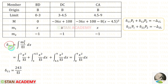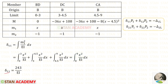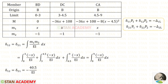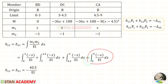Now let us find delta 11. The formula is the integration of M1 squared upon EI dx. Since EI is constant and M1 has the same values across all members, we can use a shortcut and integrate once with limits 0 to 9. For delta 11 we will get 243 upon EI. Now let us find delta 12 and delta 21 — both use the formula integration of M1 times M2 upon EI dx. Using the shortcut, X times minus 1 gives minus X, and for delta 12 and delta 21 we get minus 40.5 upon EI.